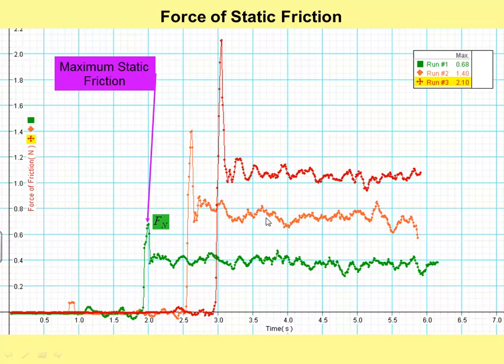For this one, this was when the normal force was twice as big. Remember I used twice as much mass, so twice as much force of gravity. And look at the maximum value. And then the red one, I had three times the mass, three times the normal force, and look at the value.